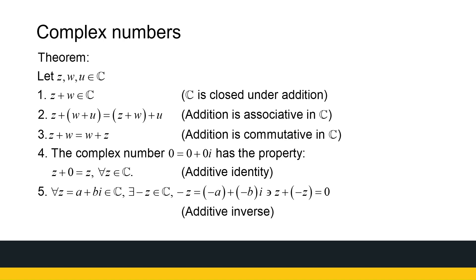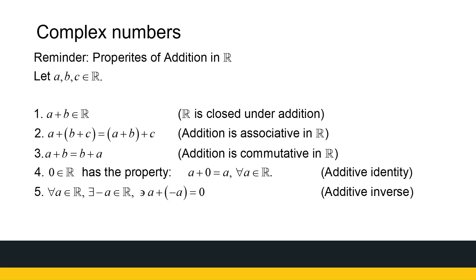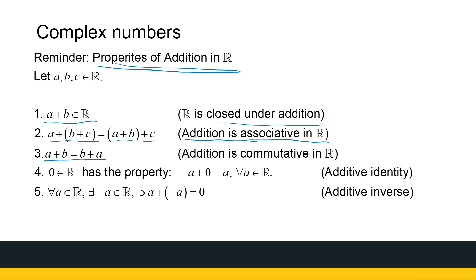Let's look at some properties of addition of complex numbers. First, I'll remind you of the real numbers. Properties of addition in real numbers: if I add two real numbers I get a real number — this is called closure under addition. Addition is associative: a plus b plus c equals a plus b plus c regardless of grouping. It's also commutative. We have an additive identity, which is zero. And for every real number there's an additive inverse — another real number that when added gives zero.